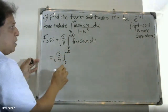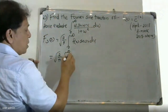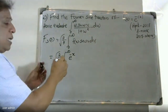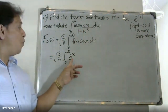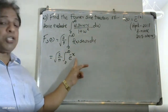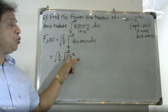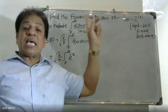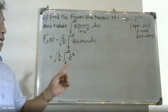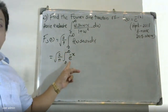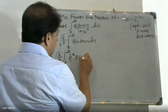Now, f(x) = e raised to minus |x|. In the interval 0 to infinity, x is always positive, therefore |x| equals x. So the integral becomes: root of 2 by pi, integral from 0 to infinity of e raised to minus x, into sine(sx) dx.